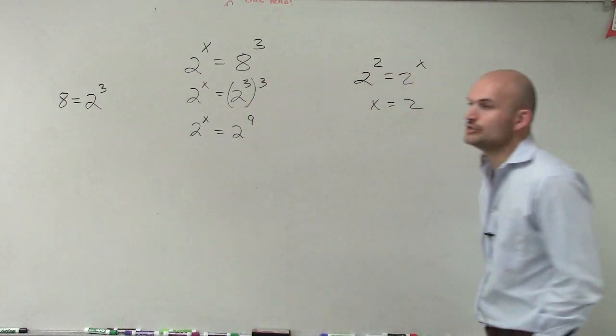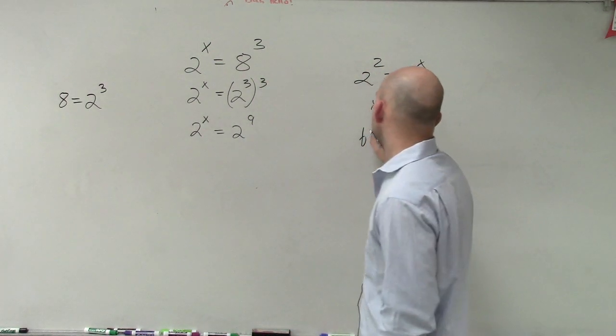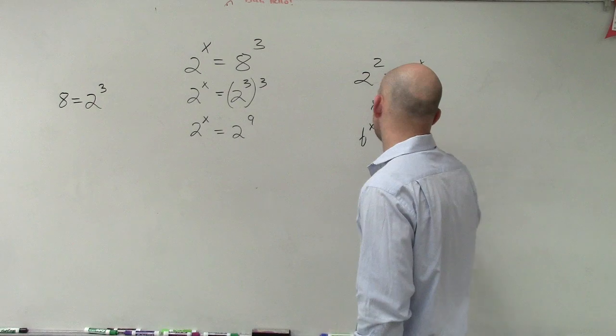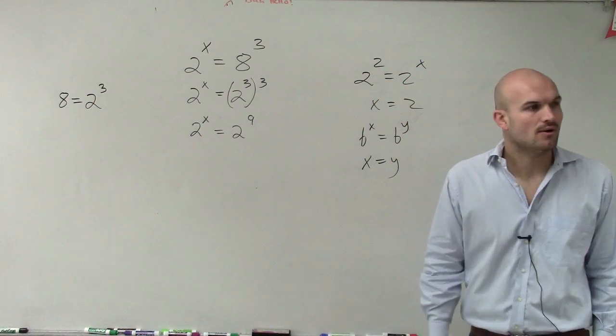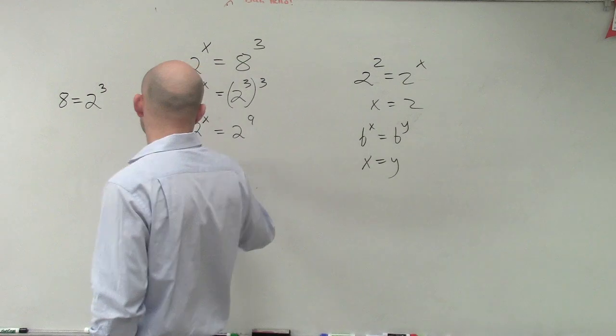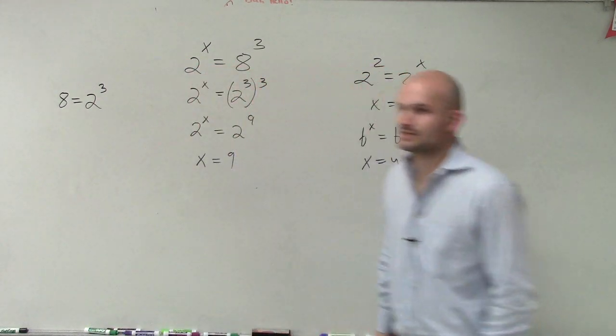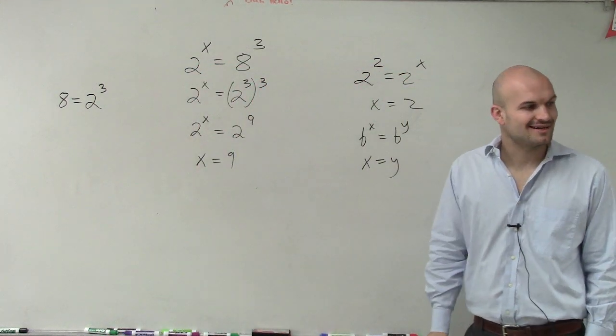Now we can use our property of equality: b to the x equals b to the y, x then equals y. So now our answer is going to be x equals 9. Isn't that cool?